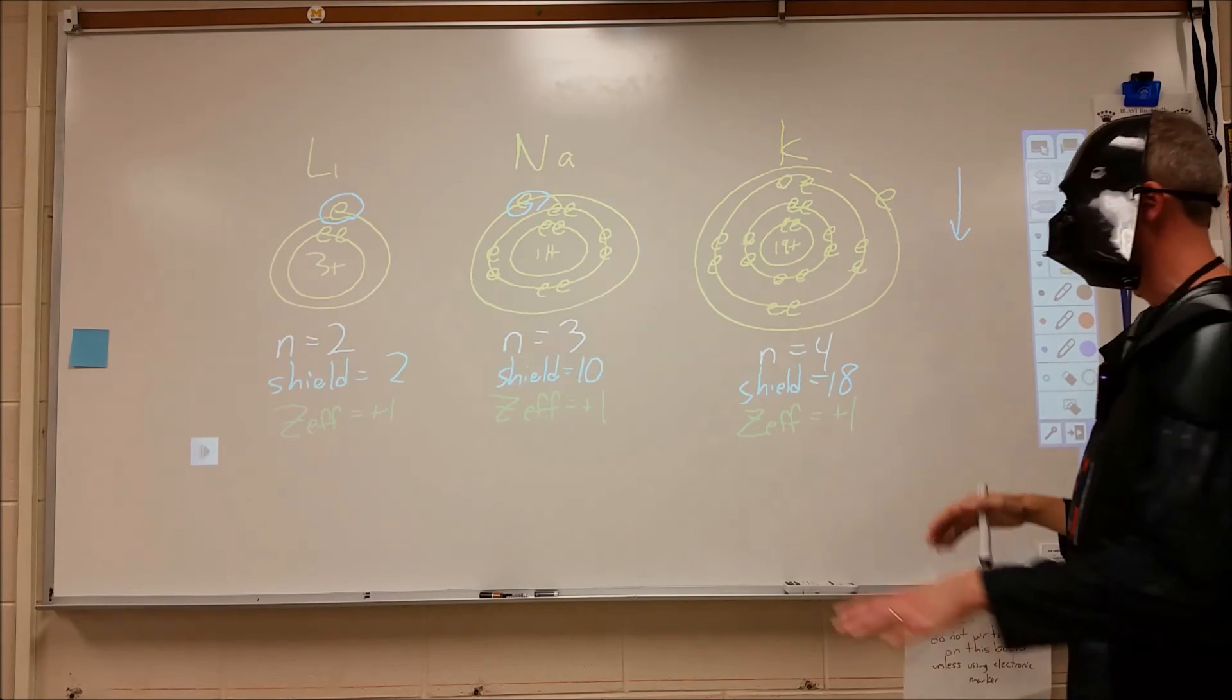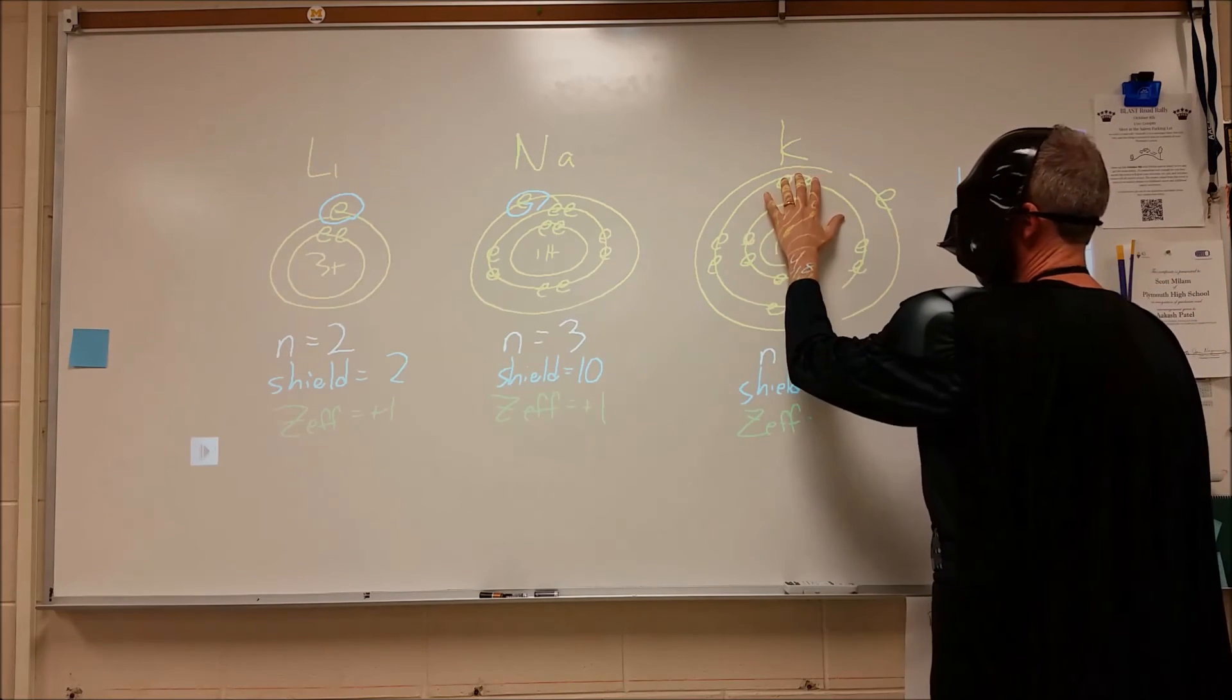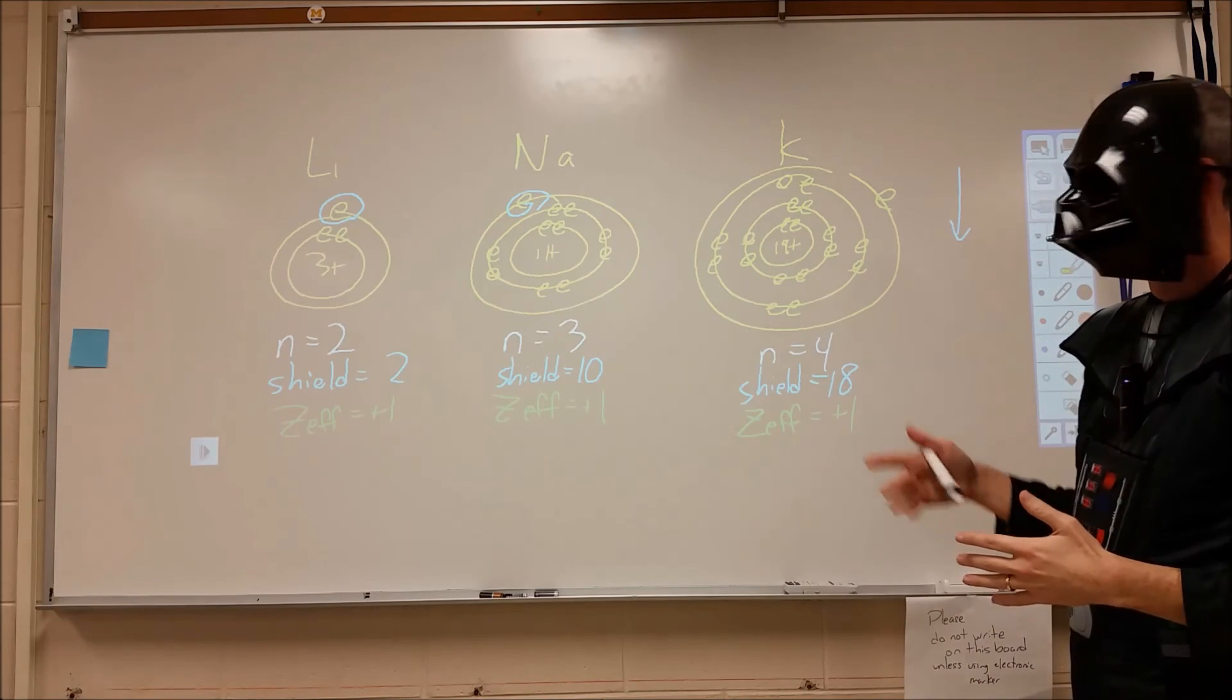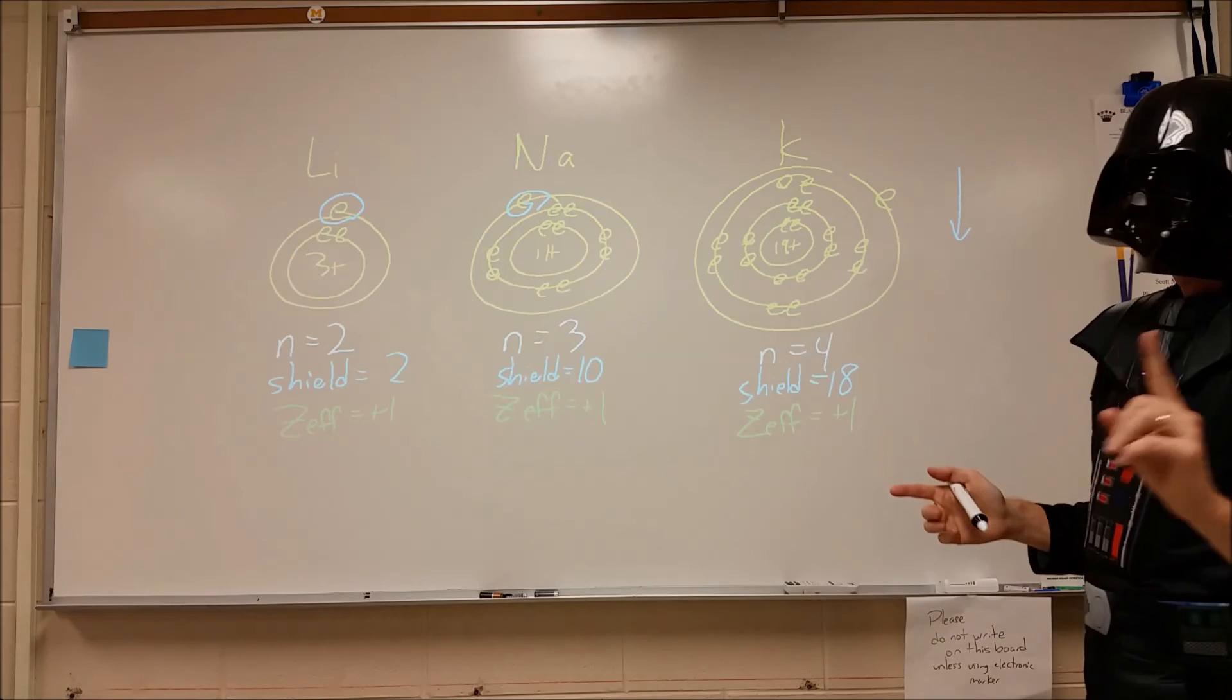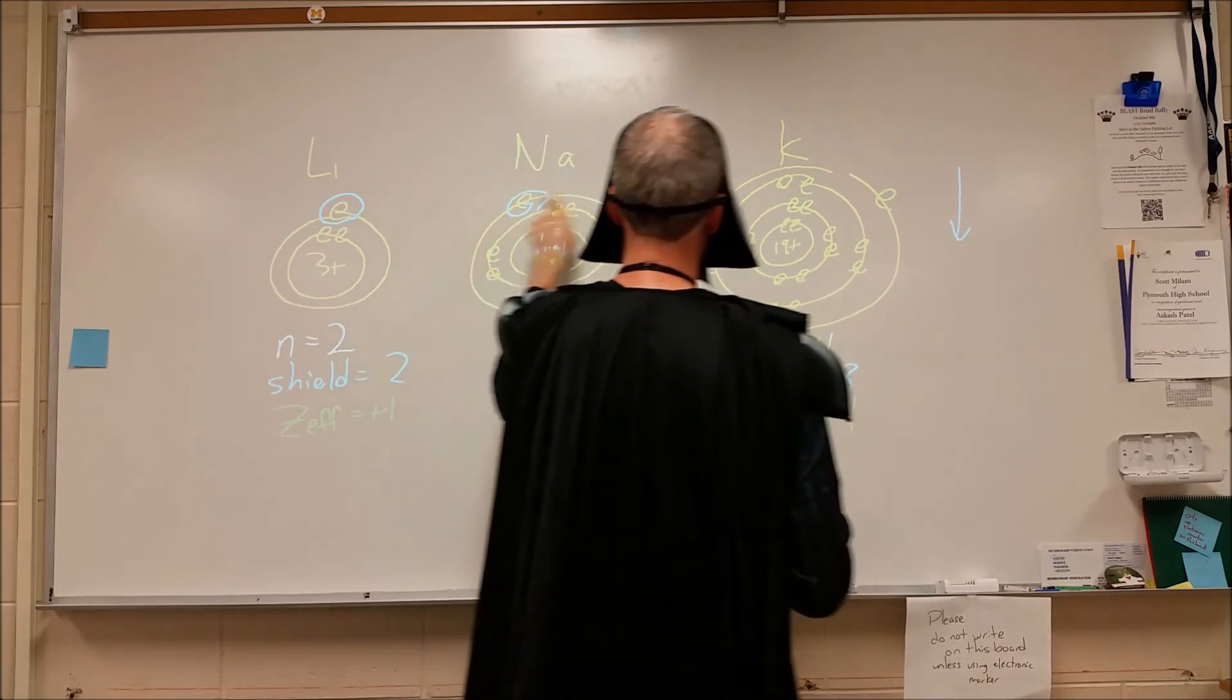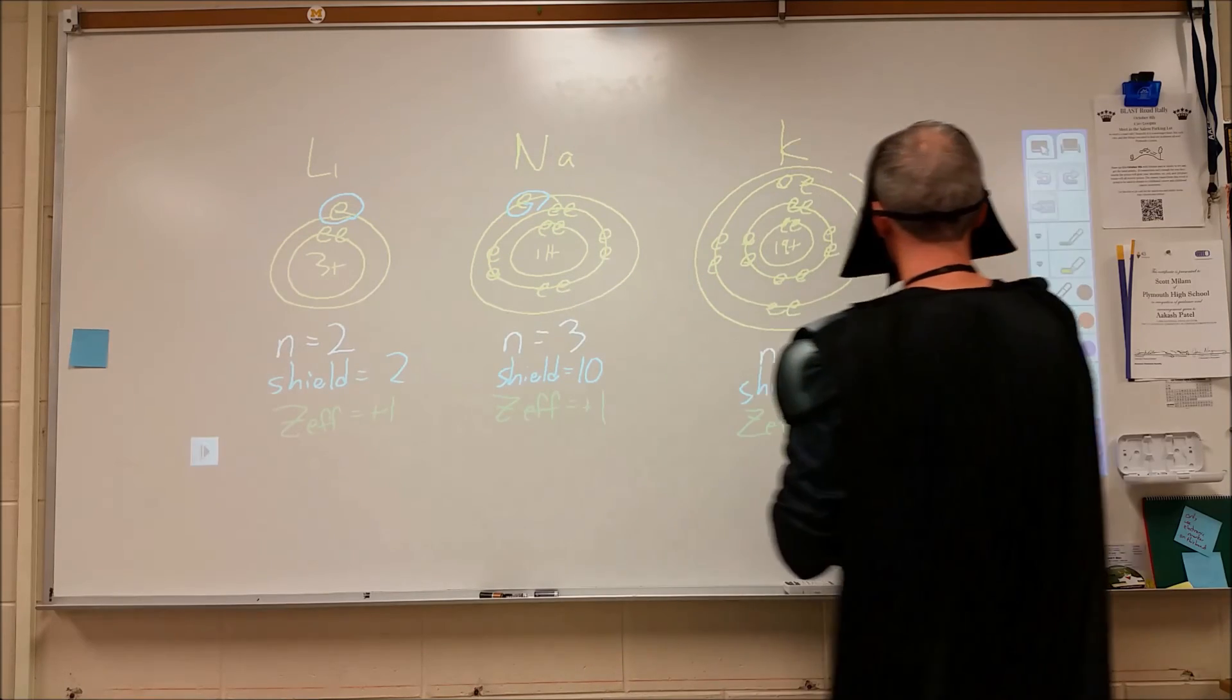What that means is that the repulsion from the core and the attraction from the nucleus is mostly about the same between all three atoms. There's one primary difference, and that is that the electrons are occupying a higher energy level for the valence.